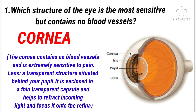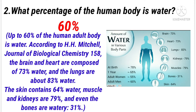Which structure of the eye is the most sensitive but contains no blood vessels? Answer: Cornea. What percentage of the human body is water? Answer: 60%.